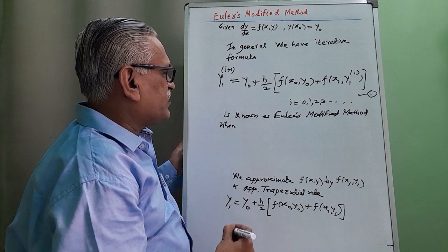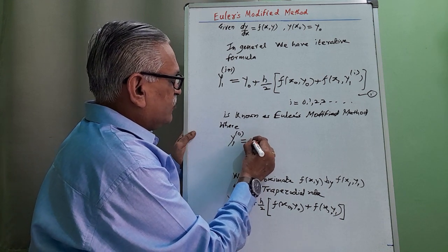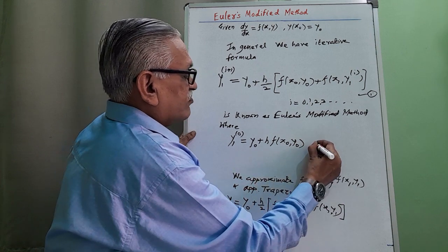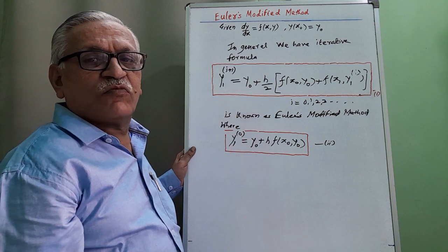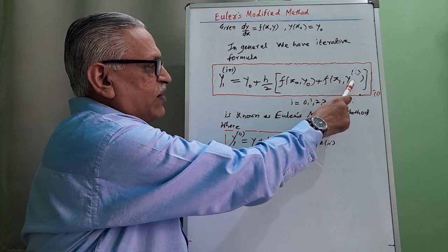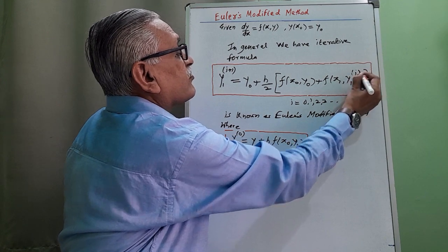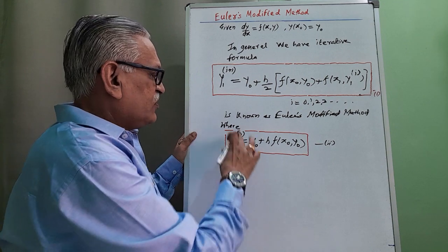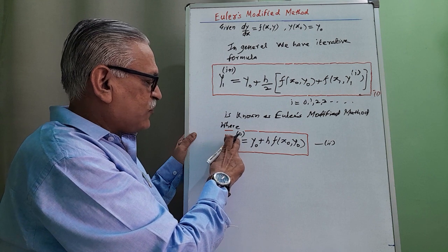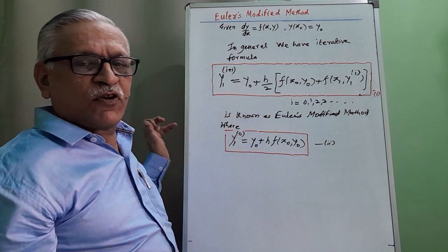We start with the zeroth approximation y₁⁽⁰⁾ = y₀ + h · f(x₀, y₀). Therefore the Euler's modified method formula is y₁^(i+1) = y₀ + (h/2) · [f(x₀, y₀) + f(x₁, y₁^(i))], where i = 0, 1, 2, 3 and so on. This formula is started with the initial approximation given by Euler's method: y₁⁽⁰⁾ = y₀ + h · f(x₀, y₀).